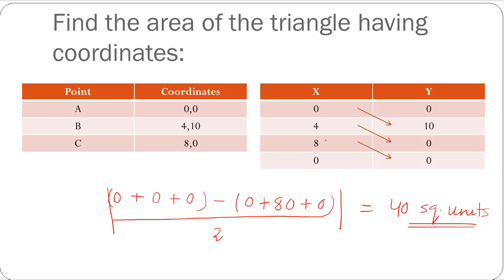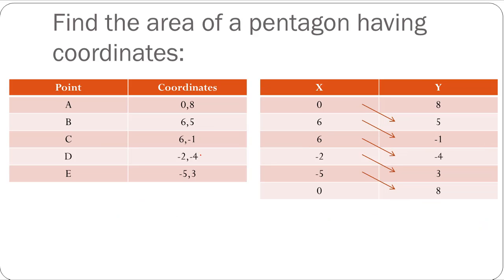Let's look at one more example in which I have taken a pentagon to find its area. The coordinates of the pentagon are (0, 8), (6, 5), (6, -1), (-2, -4), (-5, 3), and then back to (0, 8). You multiply x crosswise: 0 with 5, 6 with -1, 6 with -4, -2 with 3, and -5 with 8.